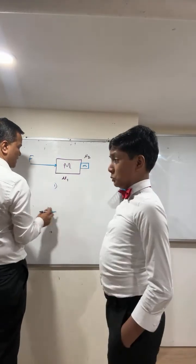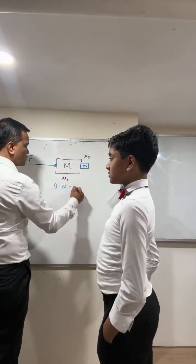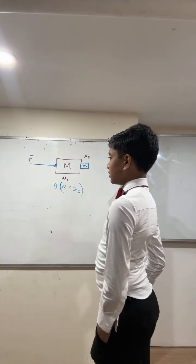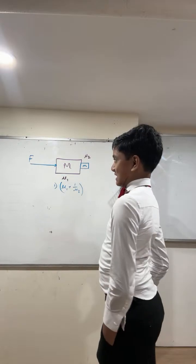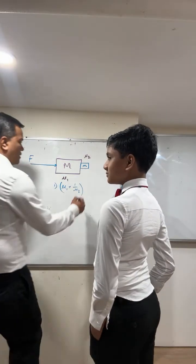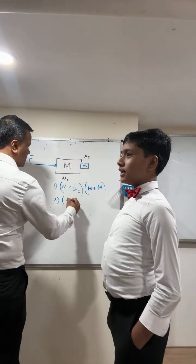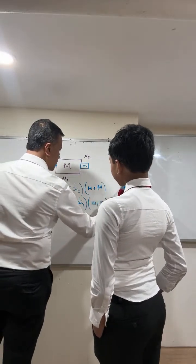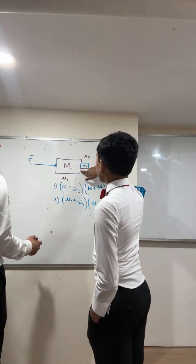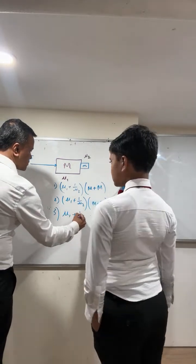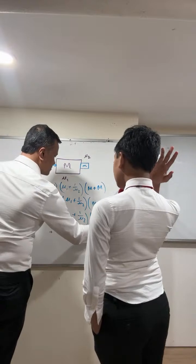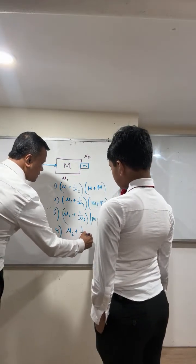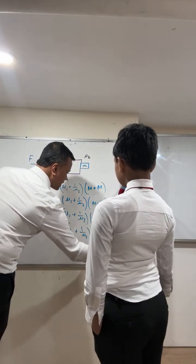I'm going to give you a few options. Number one is mu 1 plus 1 over mu 2. This question was on the AC physics program a while ago. Number two: mu 1 plus mu 2, times small m plus big M, times 1 over g. So mu 2 is the coefficient of friction on this side. Number three: mu 1 plus 1 over mu 2, times m plus big M, times g. Number four: mu 2 plus 1 over mu 1, times m plus 1 over big M, times g.